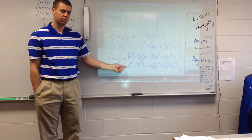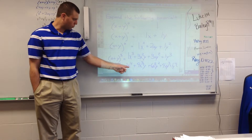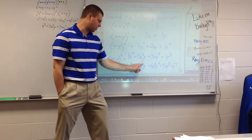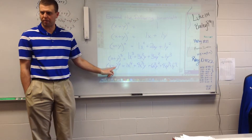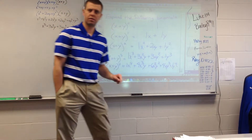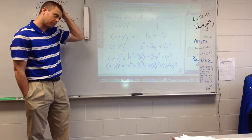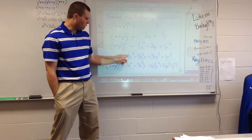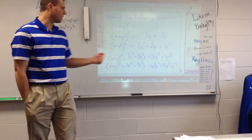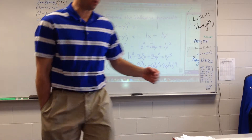The first term starts x to the fourth, then x to the third, then x squared — decreasing by one each time. The second part of the binomial, the y's, start with none of them, then 1, then 2, then 3, then 4. That pattern holds on all of the expansions. Now, the coefficients — the 1, 3, 3, 1 and the 1, 4, 6, 4, 1 — that's the connection I'm going to make with Pascal's triangle.